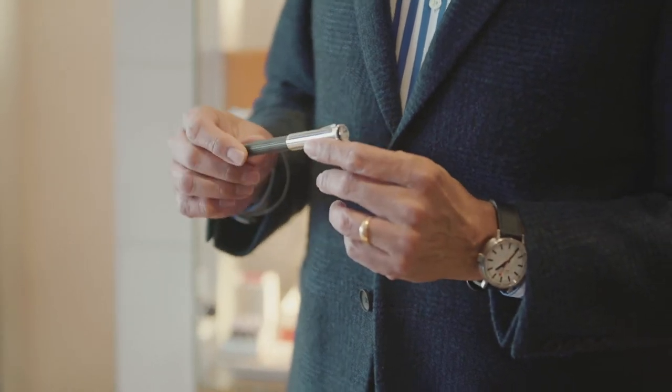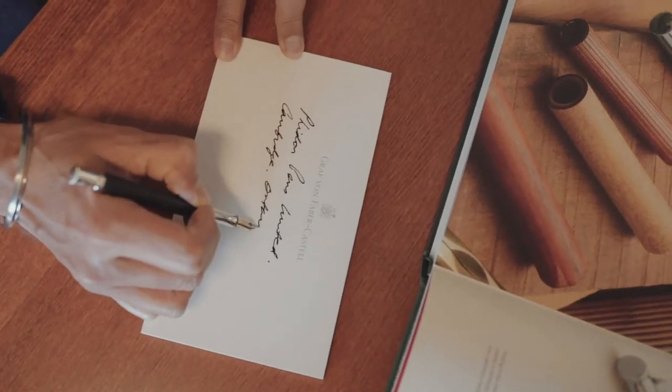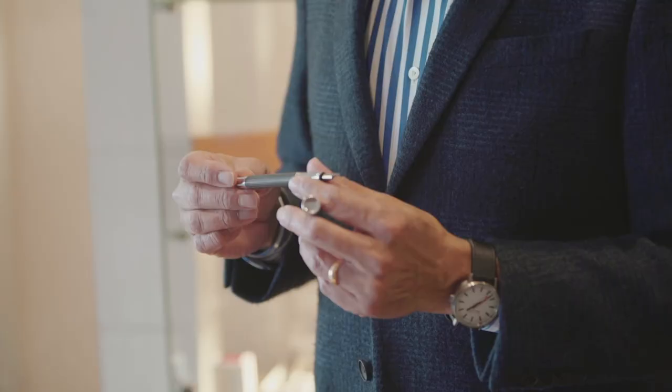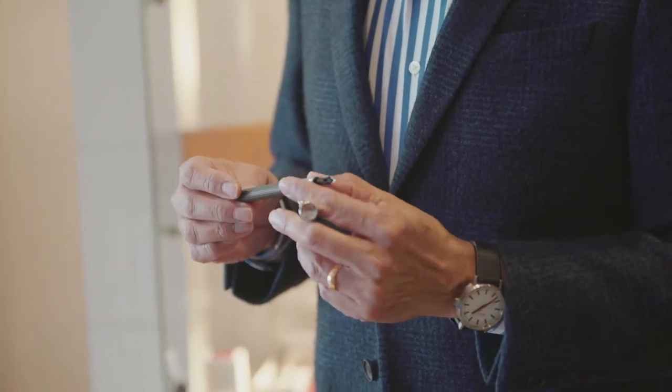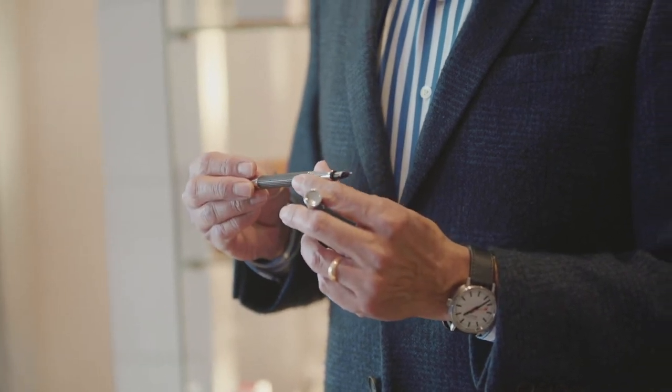It has an 18 karat gold nib, an ebony barrel with platinum coated caps. This is about 10 years old. The beauty about this wood is that it actually takes the patina off your hands and basically builds a character of its own.